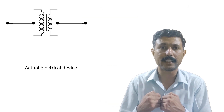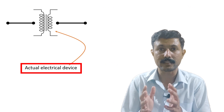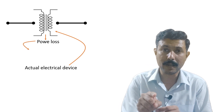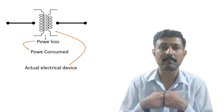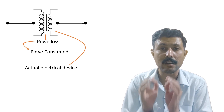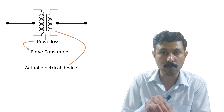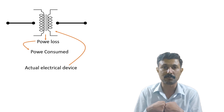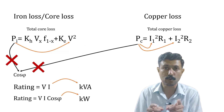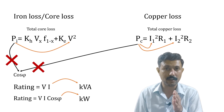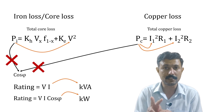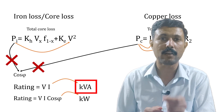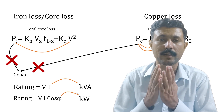Though the transformer is not a load and does not consume power, it is an actual electrical device, and any real electrical device has power losses. Those losses are considered as the power consumed by the transformer when treating it as a load. There are two types of losses: copper loss, which depends purely on current, and iron loss, which depends on voltage. Neither depends on power factor — and this is why the rating of a transformer is VA, KVA, or MVA, not watt, kilowatt, or megawatt.